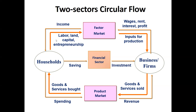Households are giving their factors of production — services in the form of labor, land, capital, and entrepreneurship. The business firm pays them in terms of wages, rent, interest, and profit. When households purchase goods like toothpaste, soap, or shampoo, they are spending. This household spending moves through the product market and in the form of revenue reaches the business firm. The business firm then uses this revenue to pay the factors of production.